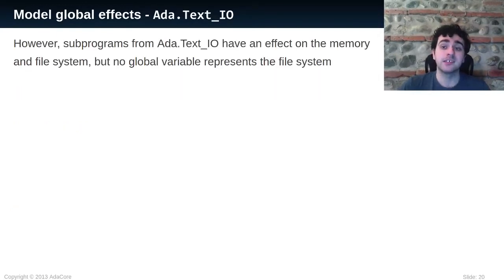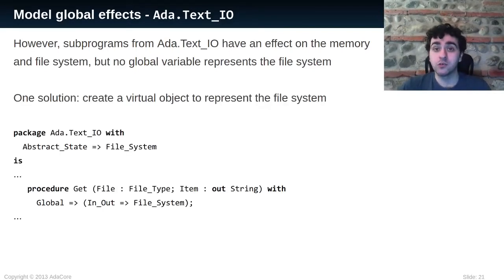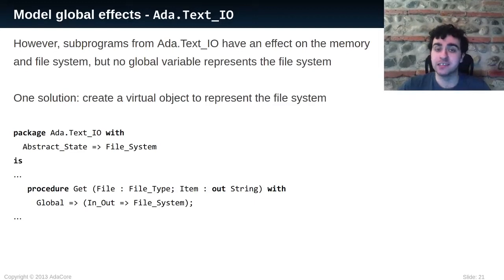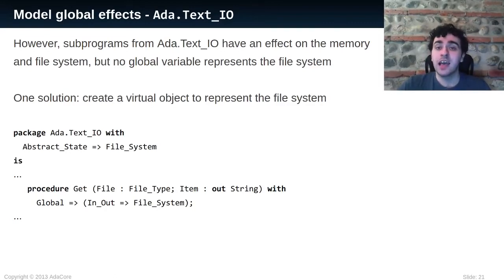However, this is not the case for Text.IO. Procedures here have an effect on the file system, or even on the standard output and input. There is no global variable representing the file system, so how can we model these effects? One solution in Spark is to create what we call an abstract state — a virtual object — and we decide that it represents the file system. It does not need to be linked to any variable in the program. We declare in the example that the package Text.IO has an abstract state called FileSystem, and after that we can use it as any other global variable in contracts.